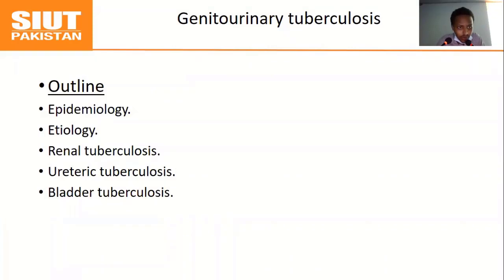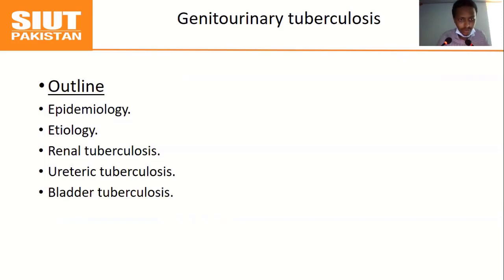Our outline today will cover the epidemiology of genitourinary TB, the etiology and cause, renal tuberculosis, ureteric tuberculosis, and bladder tuberculosis.